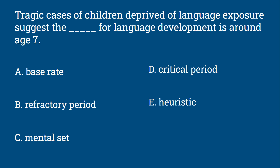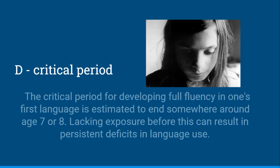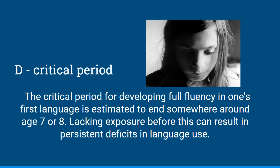And this would be D, the critical period. The critical period for developing full fluency in one's first language is estimated to end somewhere around age 7 or 8. Lacking exposure before this can result in persistent deficits in language use.